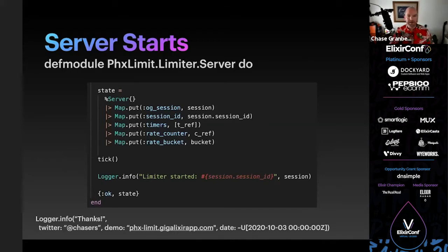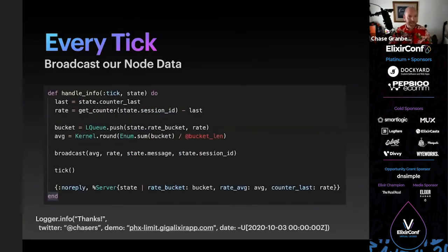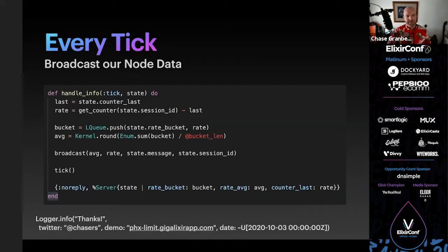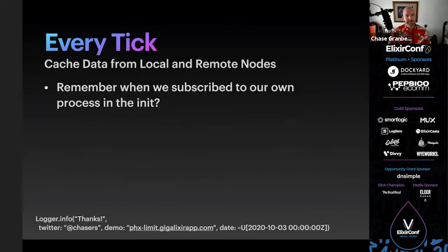On every tick — every second — we get `state.counter_last`, which is what we counted last second. The current rate is the current counter minus the last second's count. We push that into our queue, average it to get our average rate, broadcast all that data to the cluster, and then set a timer to do all of it again. This is where all the rate limit data from each node gets passed around to the whole cluster.